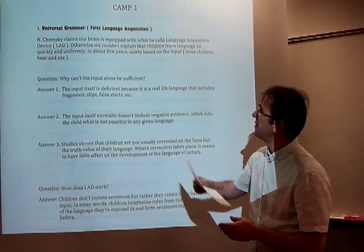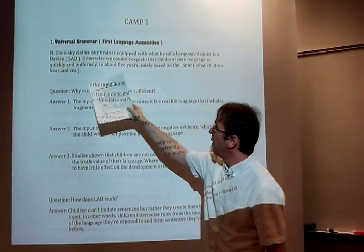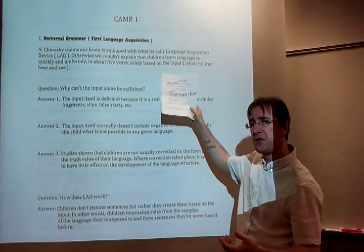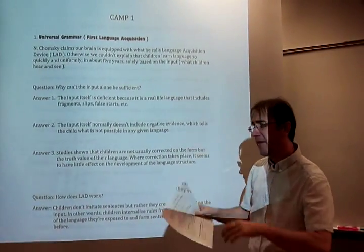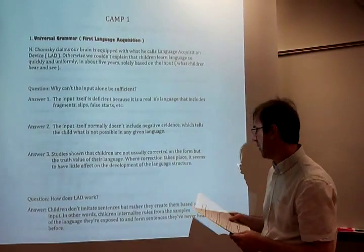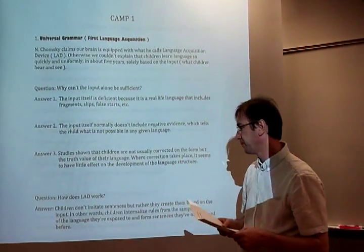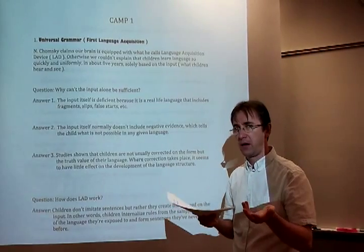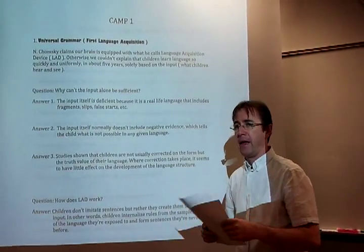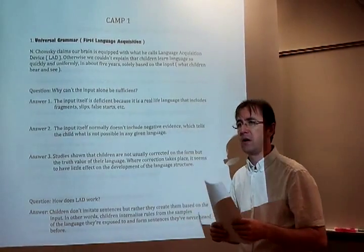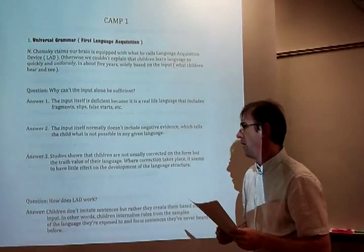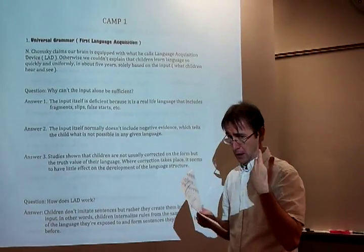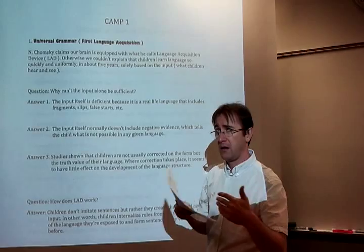So how does LAD work? Chomsky says that with the help of the language acquisition device in our brain, children use the insufficient input and work out the internal rules of the language. They internalize whatever they hear, work it out, and with time produce the correct language. They do not imitate — as was previously claimed in the work of Skinner, for example — but rather internalize rules that come from the input.